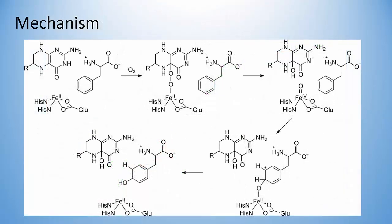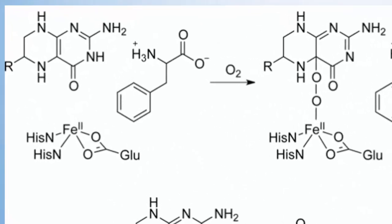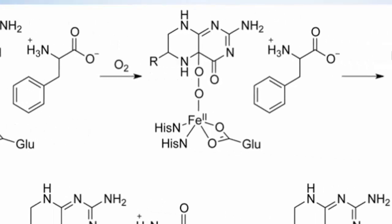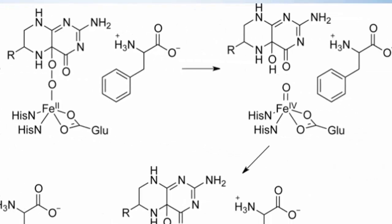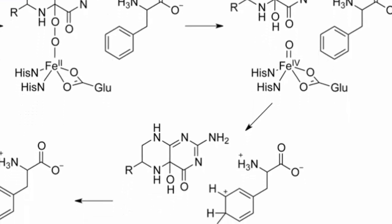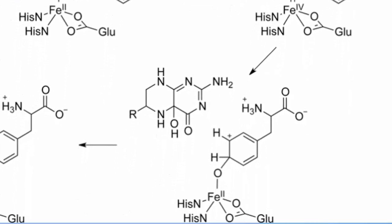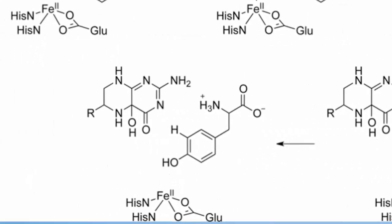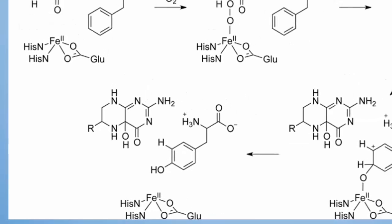Here we can see a detailed mechanism for the reaction. The first step involves the formation of an oxygen bridge between the enzyme's iron atom and BH4 using O2. The O-O bond is then heterolytically cleaved to form a ferryl-oxo intermediate. This intermediate is then attacked by phenylalanine, which breaks off to form tyrosine and regenerate the enzyme.